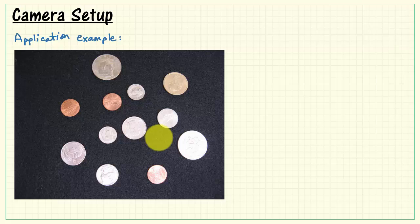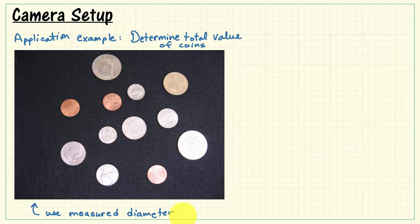Let's consider a simple machine vision application. I'm looking at a collection of coins, and I'd like to determine the total value of the coins based on the measured diameter of each coin. As you look at the image, of course, we have a range of sizes. The dime and the penny are the most similar, and these are the ones that guide our choice for minimum feature size.